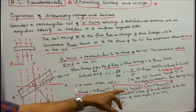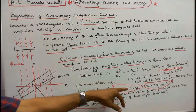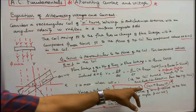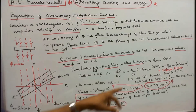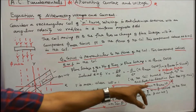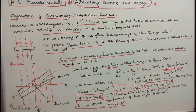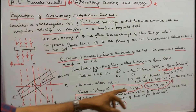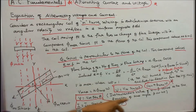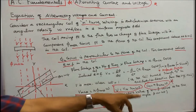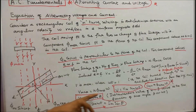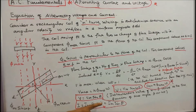Therefore, v equals Vm sin(ωt), where Vm equals N φm ω. The instantaneous value of EMF varies as the sine function of time angle θ or ωt. We can write v equals Vm sin θ. Similarly, i equals Im sin(ωt), which equals Im sin θ. With this, I conclude my lecture. Thanks for listening.